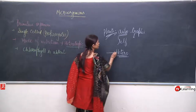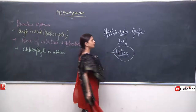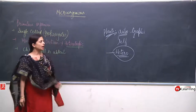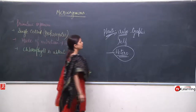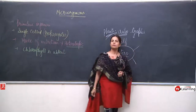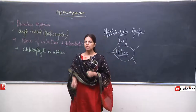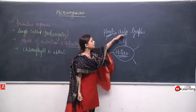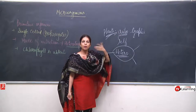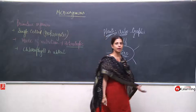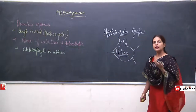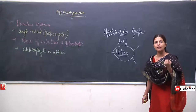Bacteria also comes under the category of heterotrophic. How do they get their food? Heterotrophic has many different classes — it may be parasitic or saprophytic. The ones which do not have chlorophyll cannot be autotrophic; they cannot make their own food because they need chlorophyll to do so.